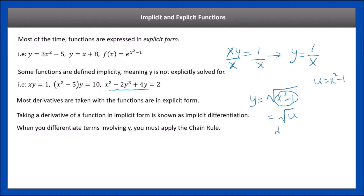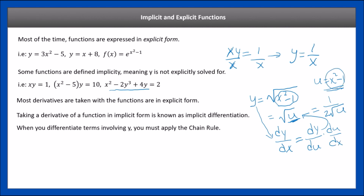To get dy/dx, differentiate with respect to x by writing it in terms of u. Take the derivative of y with respect to u — the derivative of square root of u is 1 over 2 square root of u, using the power rule. Then take the derivative of u with respect to x, which is 2x, since the derivative of x squared minus 1 is 2x. So dy/du is 1 over 2√u, and du/dx is 2x. Then replace u with x squared minus 1. This is the basic form of the chain rule.